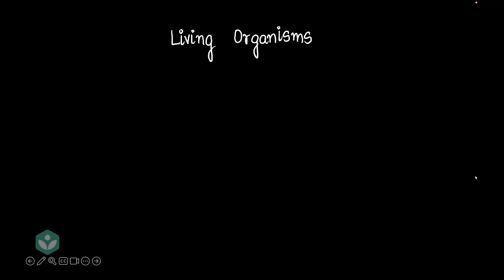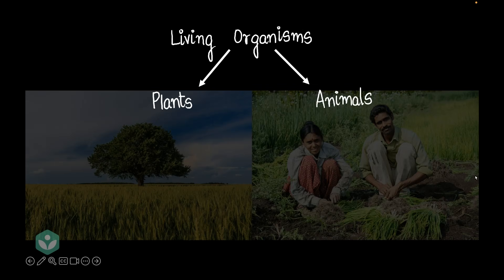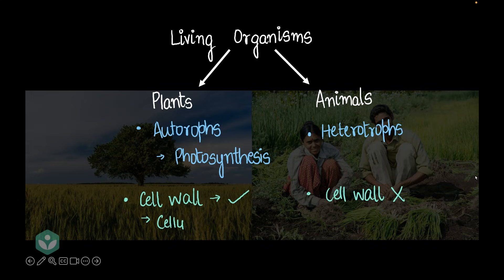Growing up, I always thought all the living organisms on the earth's surface were categorized into two types: they were either plants or they were animals. Plants were autotrophs — they made their own food by photosynthesis. Animals, on the other hand, were heterotrophs and they consumed other animals or plants for food. Animal cells did not have a cell wall, while plant cells had cell walls made of cellulose.